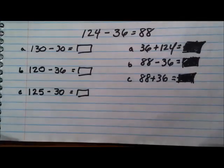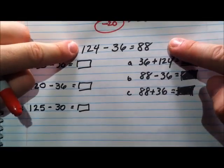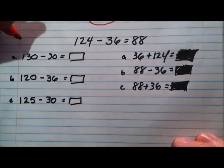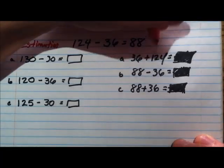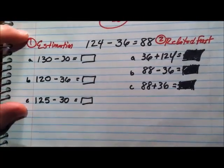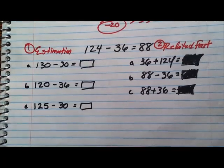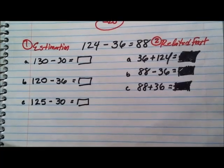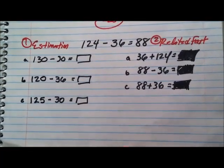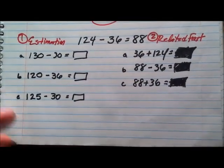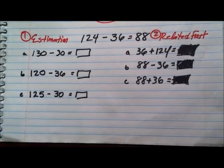You have two questions to solve. Here's the actual problem: 124 minus 36 equals 88. I want to check this work with estimation and then the related fact. Problem one and problem two — your job is to choose an estimation. Which of these is the best estimated answer? Which one gives me the closest result and has the best rounding? And then over here, which one is the correct related fact to check my work for 124 minus 36 equaling 88?